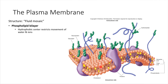This phospholipid bilayer really helps to prevent movement of things across the plasma membrane. It doesn't let polar molecules like water through, doesn't let ions through, so the chemical structure is very conducive to preventing movement across the plasma membrane.